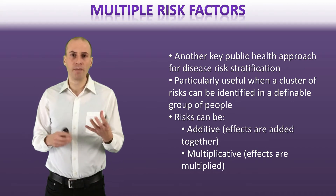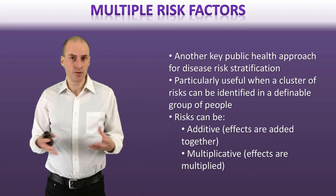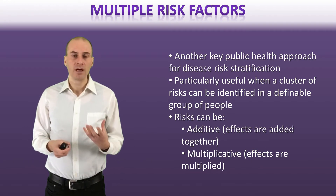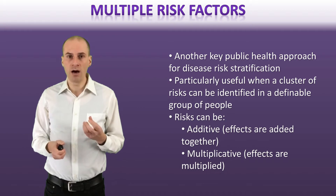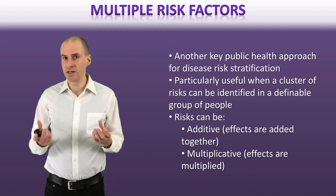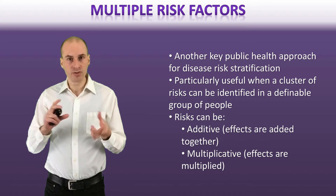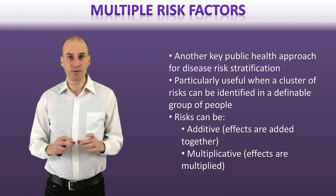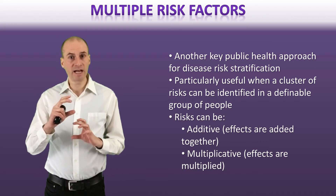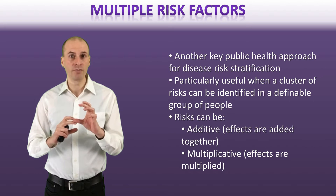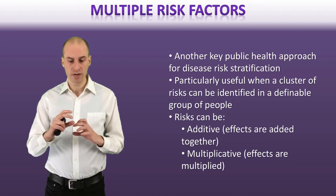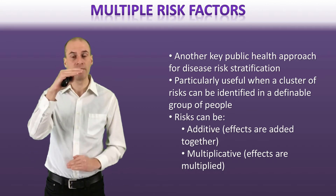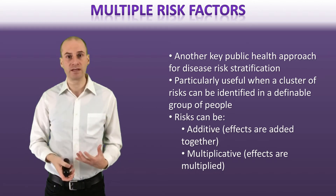Something to know about multiple risk factors is that they can be additive or multiplicative. In some cases, if you have one risk and another risk, you just add those risks together to get the combination. Another possibility is that you might actually multiply them by one another — it's not just the addition of those two, but a multiplicative effect. So it's actually much higher if you have two risks at the same time.